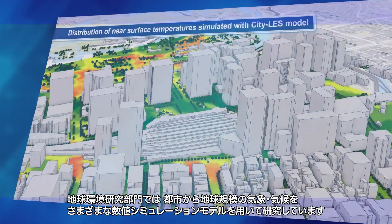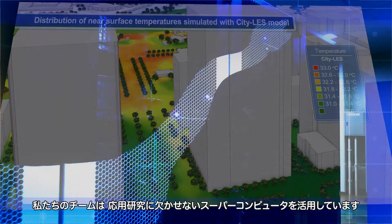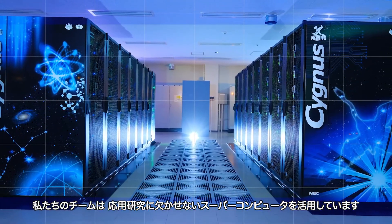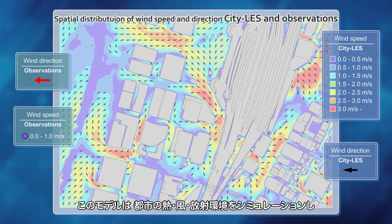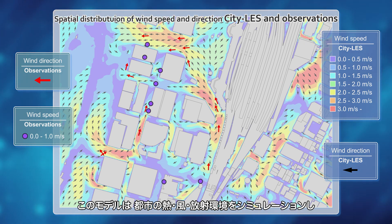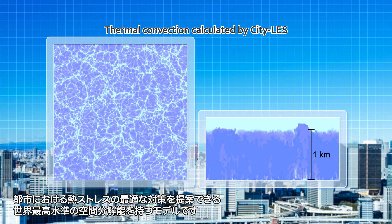In the division of global environmental science, we study urban-to-global-scale weather and climate using various numerical simulation models. Our team uses the supercomputer as an essential tool for applied studies. We have developed our own city area model, City LES, which is one of the world's highest spatial resolution models. It can simulate urban thermal, wind, and radiation environments and propose the best possible countermeasures to heat stress in cities.